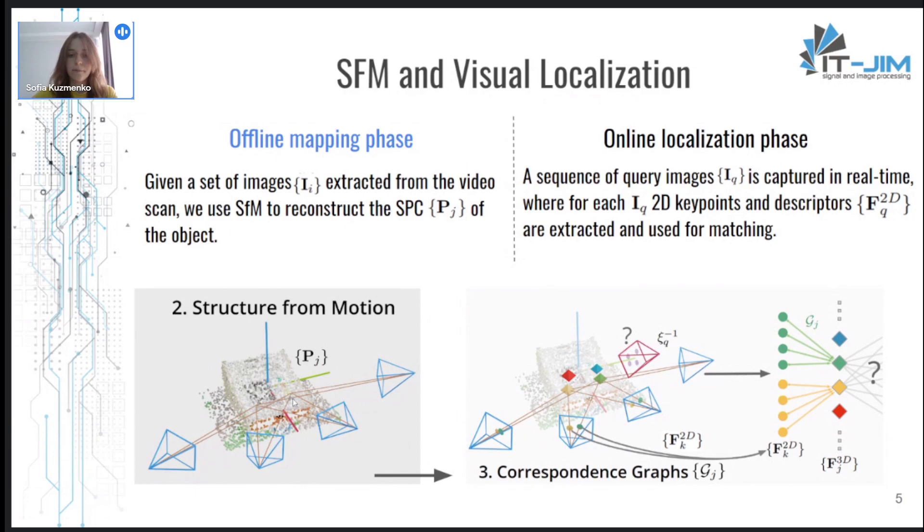And during SFM, the correspondence graph of the object is built where every 3D point from the reconstructed point cloud corresponds to a set of matched two-dimensional descriptors. In the online localization phase there comes a new query image which needs to be localized and its two-dimensional descriptors are extracted.